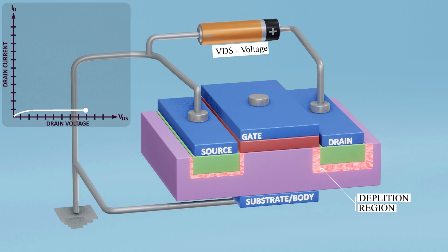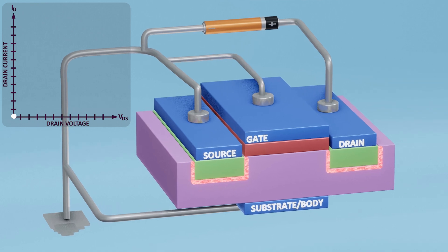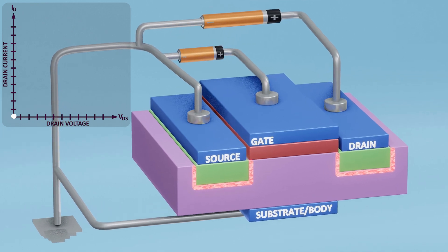As a result of this expansion, there will be no current flow from the drain to the source and the MOSFET is turned off. The operating state is referred to as the cutoff region. To allow current to flow from the drain to the source, we need to create a channel between them.